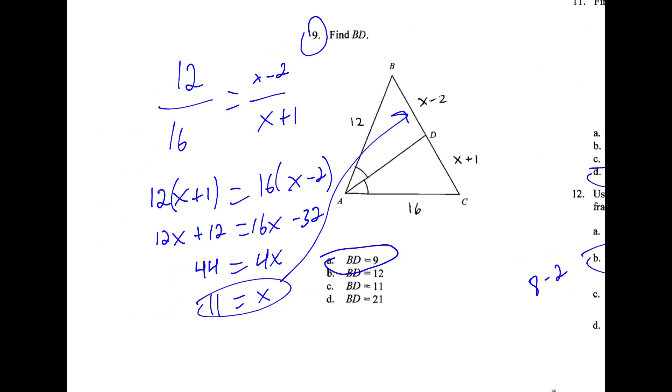For number 9, we set up a proportion like this. 12 is to 16 as x minus 2 is to x plus 1. We cross multiply, so then we distribute. We combine like terms and move all the x's to one side and the numbers to the other. We get x is 11. It's not the final answer though. They want to know bd. So 11 minus 2 is 9, a.